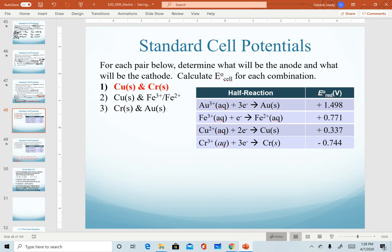All right, let's put all of this together in a practice calculation. So I'm going to work through example number one here. I'm going to ask you to work through two and three. The answers are on the next slide. So I want to make a galvanic cell using copper and chromium as my two half reactions.